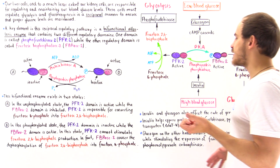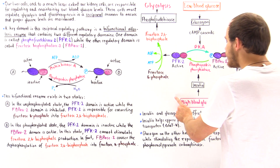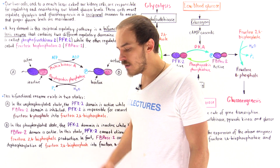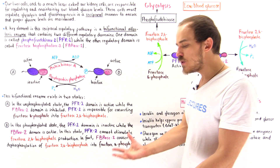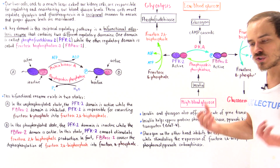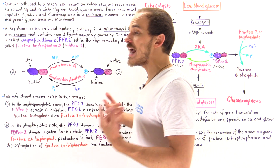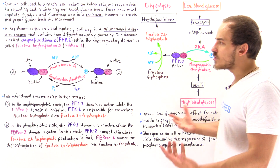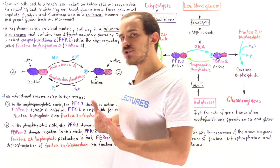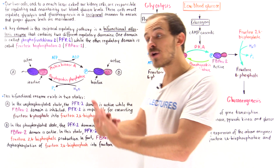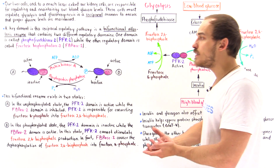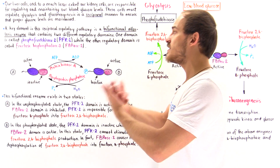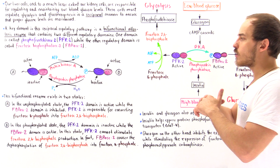Why does that make sense? If we have high levels of glucose in our blood, our kidney and liver cells want to remove the excess glucose, because high levels of glucose can be very toxic. So these liver cells pull in glucose molecules and break them down to ATP via glycolysis, which also helps decrease the level of glucose in the blood.